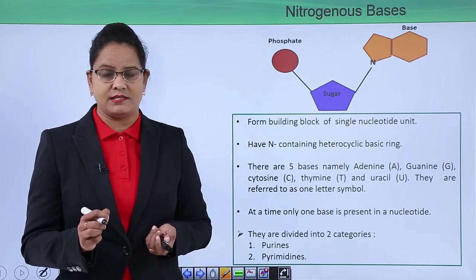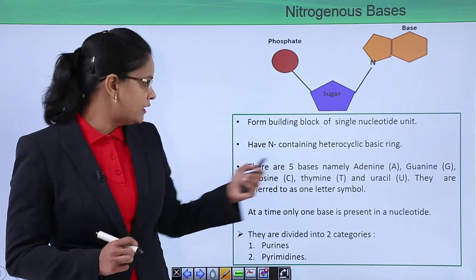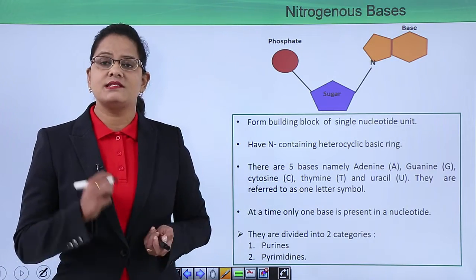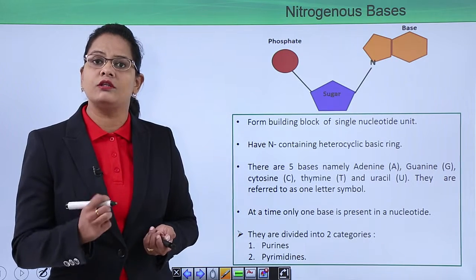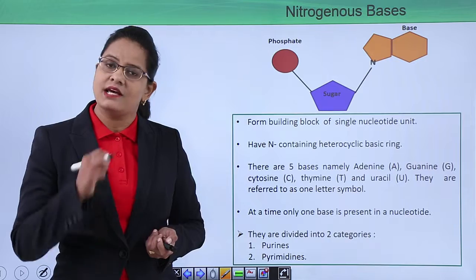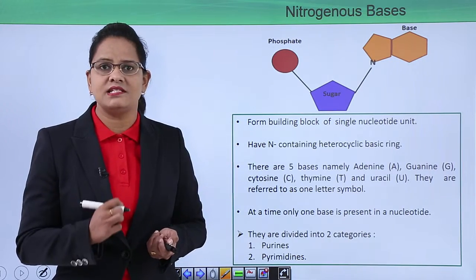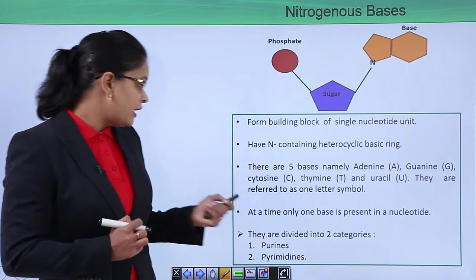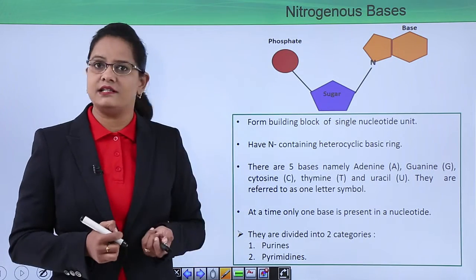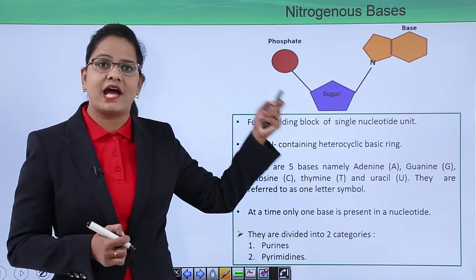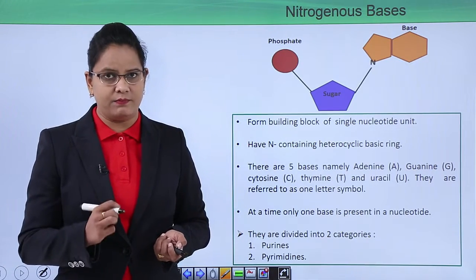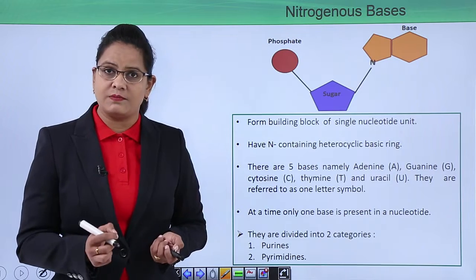There are five nitrogenous bases in total: adenine, guanine, cytosine, thymine, and uracil. These bases are abbreviated by their first letter — adenine is A, guanine is G, cytosine is C, thymine is T, and uracil is U. At any one time, only one base is present per nucleotide, as you can clearly see in the structure — one base is attached to one sugar.